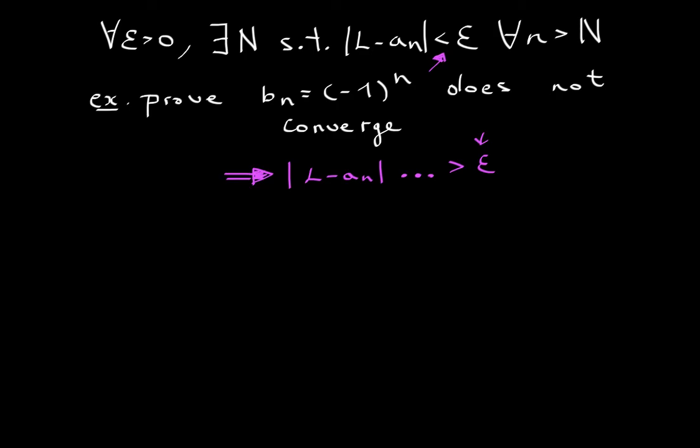To see that it doesn't converge to one, because some students think the illusion is that B_n, or (-1)^n, converges to one. This is my proof: choose an epsilon which is less than this value. Choose epsilon equal to 0.5.